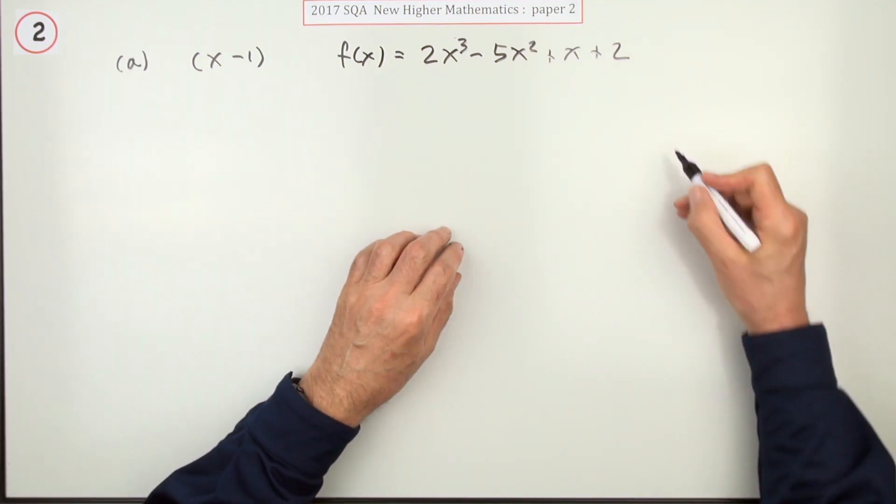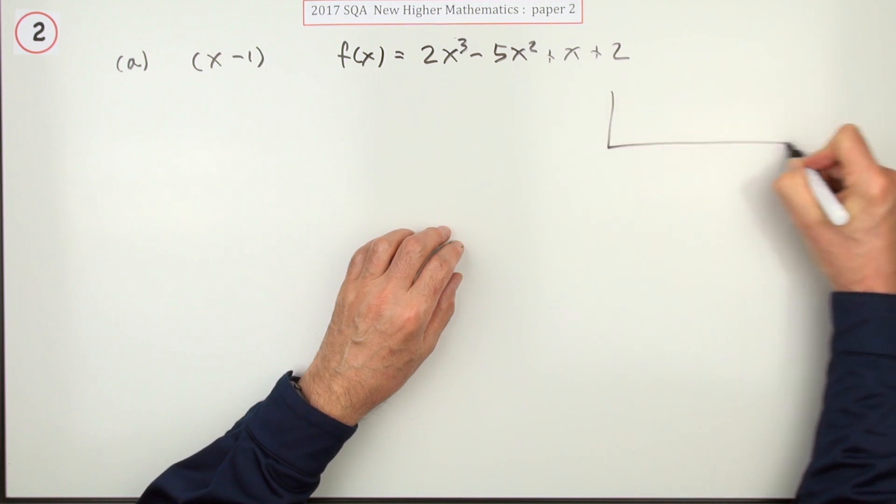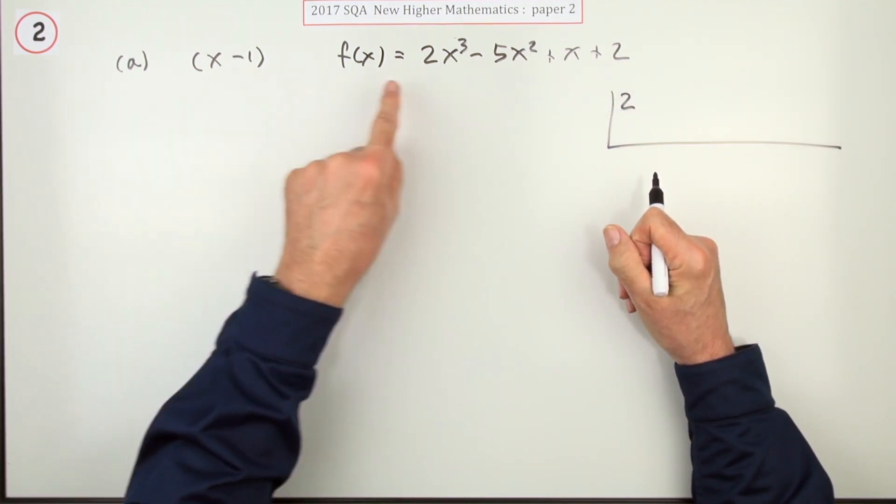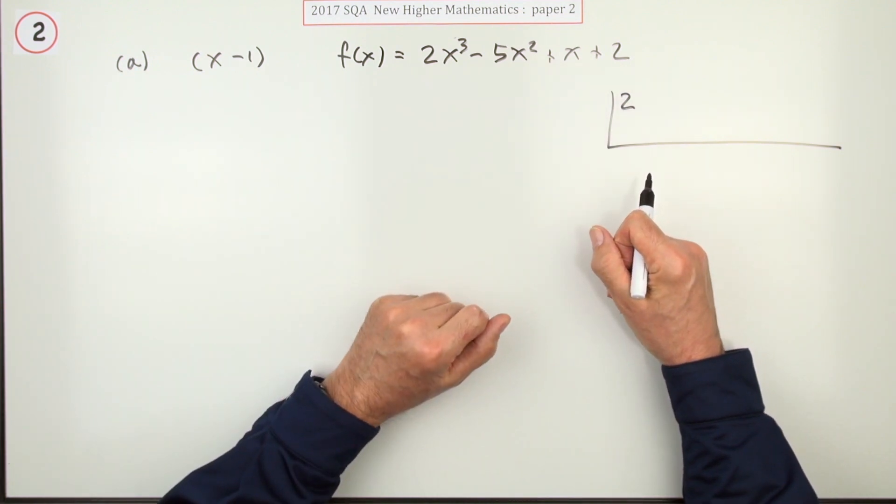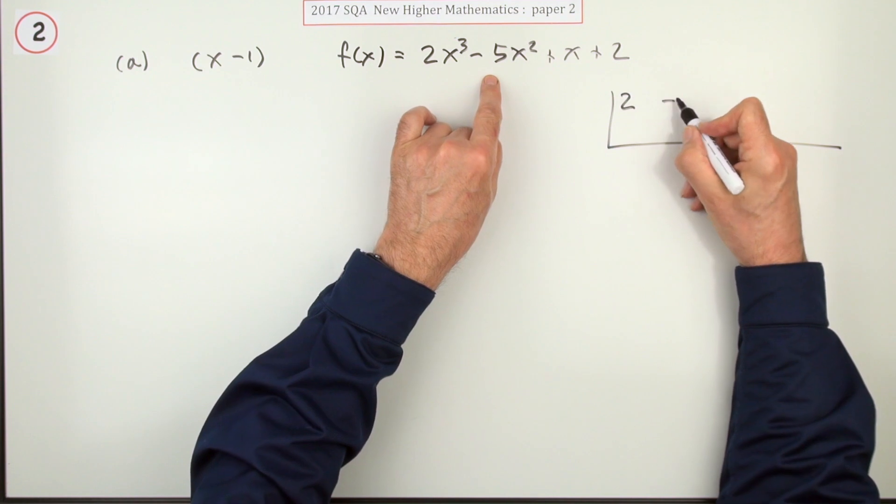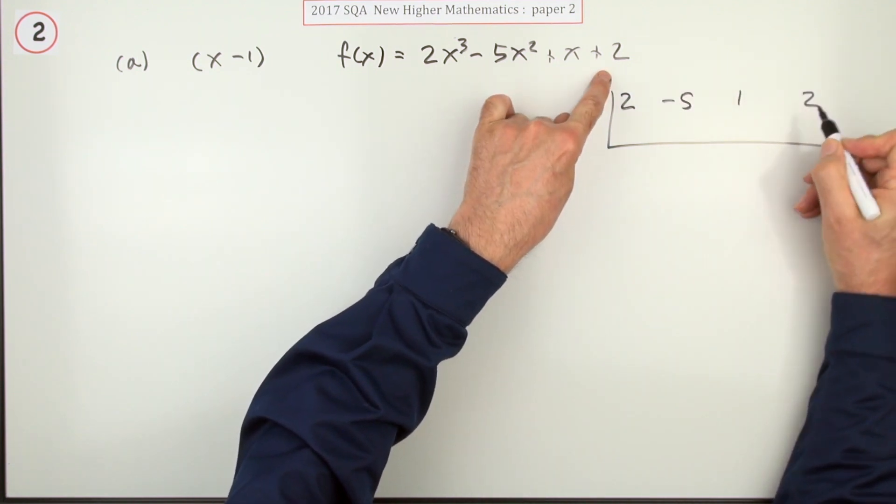Part a first. To show it's a factor, we'll use synthetic division. You're going to need it for part b anyway. You could show it's a factor by putting one through this and showing you get the answer zero, but then you'd have to start again to do part b.